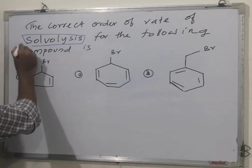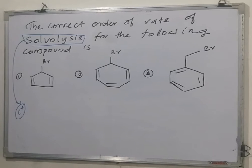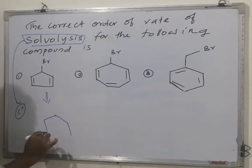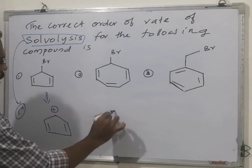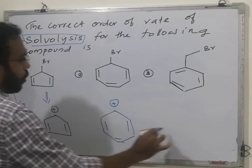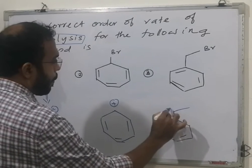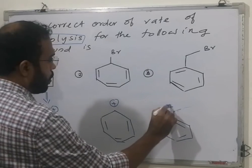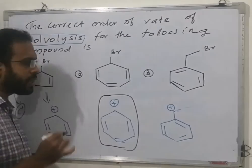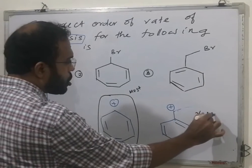Therefore, we understood that this is a nucleophilic substitution where the intermediate is a carbocation, and rate is directly proportional to stability of that intermediate. What is the intermediate here? Let's look at each compound's intermediate.